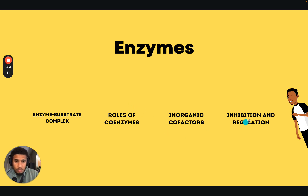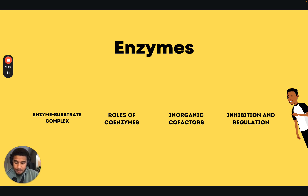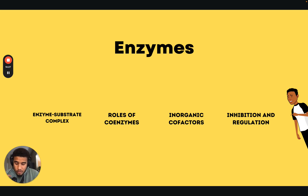Let's finish up with inhibition and regulation. Inhibition and regulation are fundamental concepts in biochemistry and biology, describing the control and modulation of enzymatic reactions and cellular processes. Inhibition refers to the process of slowing down or preventing enzymatic reactions by various molecules or factors. You need to understand competitive inhibition and non-competitive inhibition and know the difference between the two.